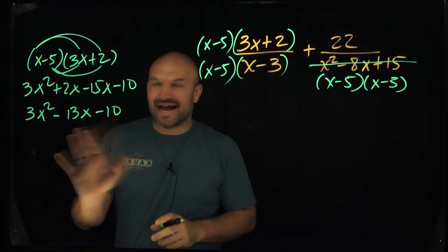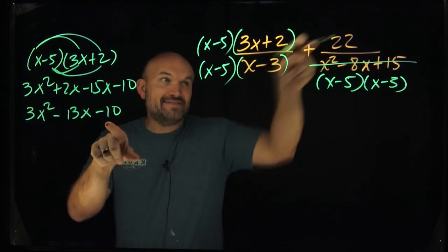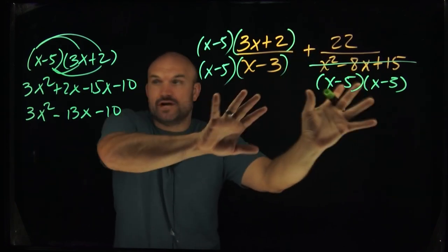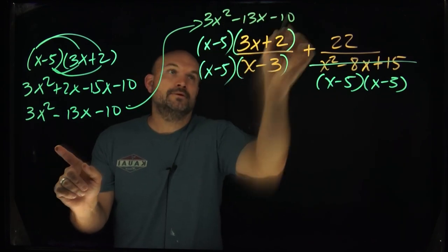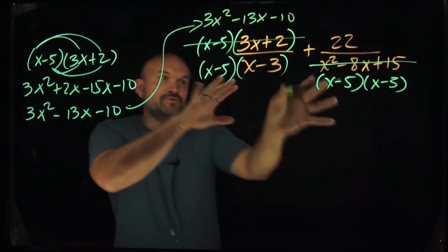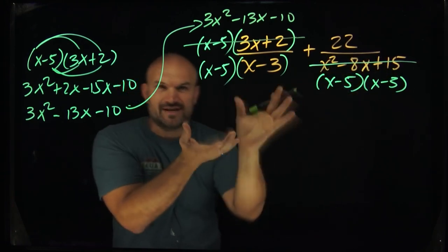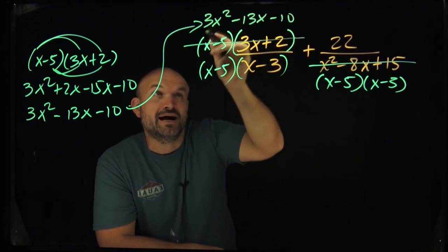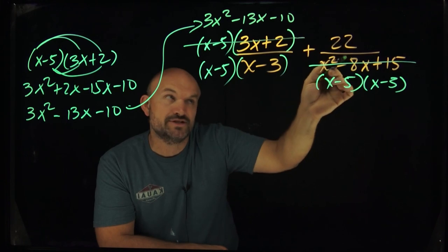All right, so now you can see we have this 3x squared minus 13x minus 10. And what I'm going to have to do is I'm going to have to combine that here. Now I'm going to add that to my 22, right? Because again, as long as my denominators are the same, you can just rewrite this if you want to right up top. So just like I did over here, I can rewrite the expanded form as a factor form. I can identify what the common denominators are. Over here, I can multiply this out. So I have it expanded. And the reason why I want to do that is because I want to add this to my 22.